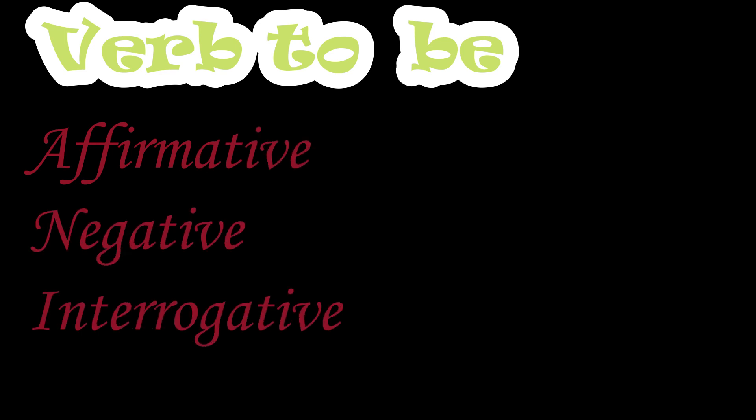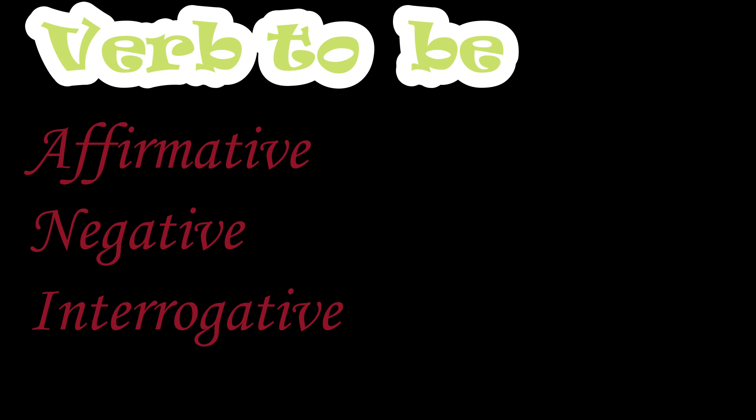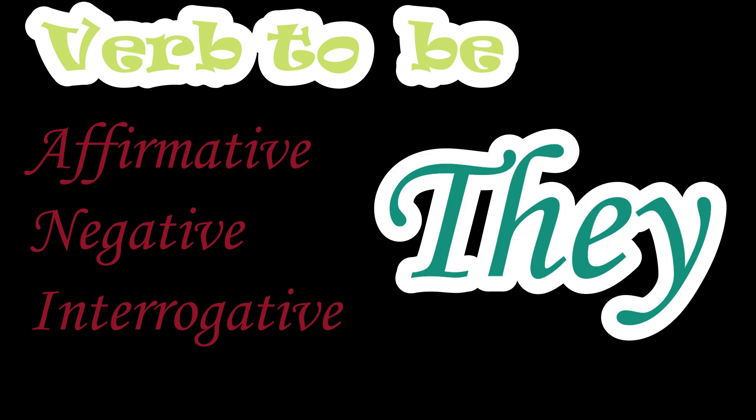Very easy, isn't it! The verb to be and all the pronouns in English — in the affirmative, the negative, and the interrogative. Now you can conjugate to be in all forms. Let's recapitulate the pronouns: I, you, he, she, it — this is singular. Plural: we, you, and they. They goes with people, animals, and objects.